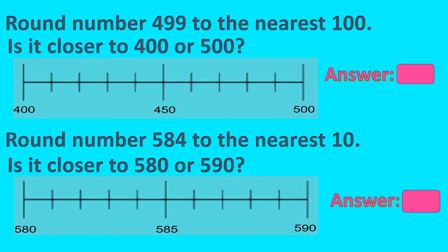Now let's see this example, my children. Round number four hundred and ninety-nine to the nearest hundred. We have to compare and find out the two hundreds in between which this number lies. Is it closer to 400 or 500? With the help of the number line we can clearly make out that four hundred and ninety-nine is very much near five hundred. So we will round it to five hundred.